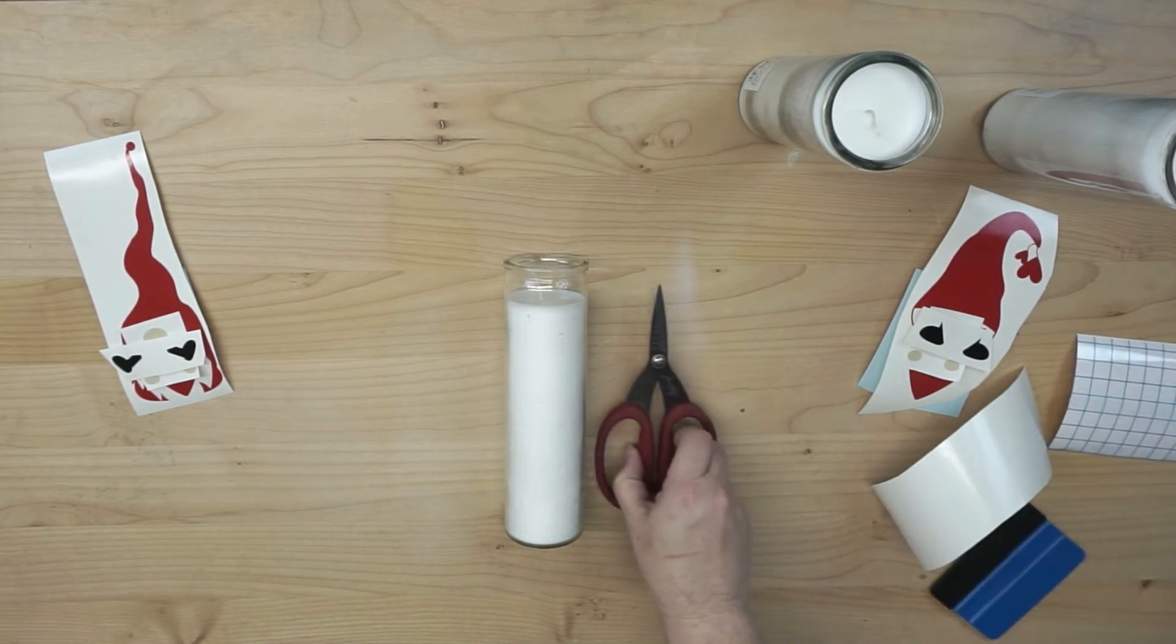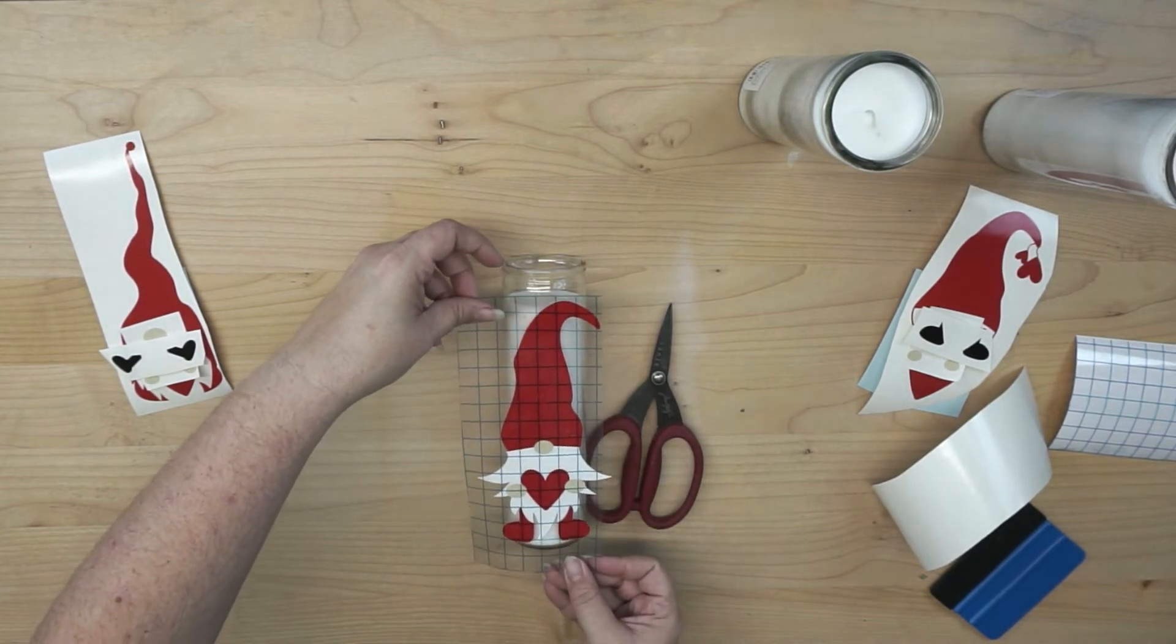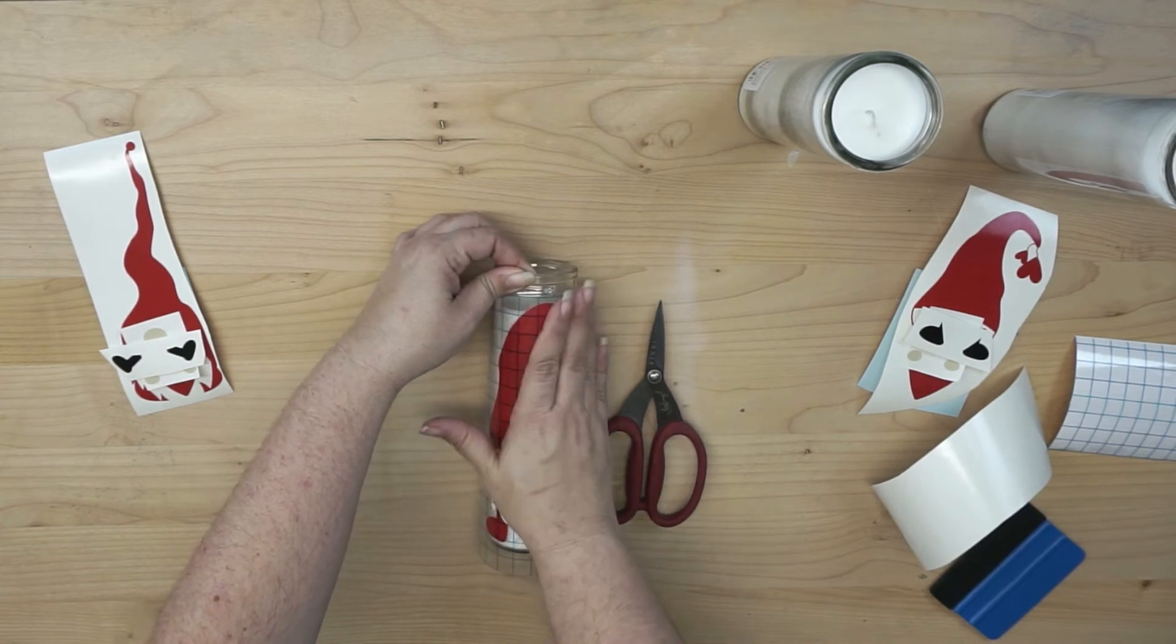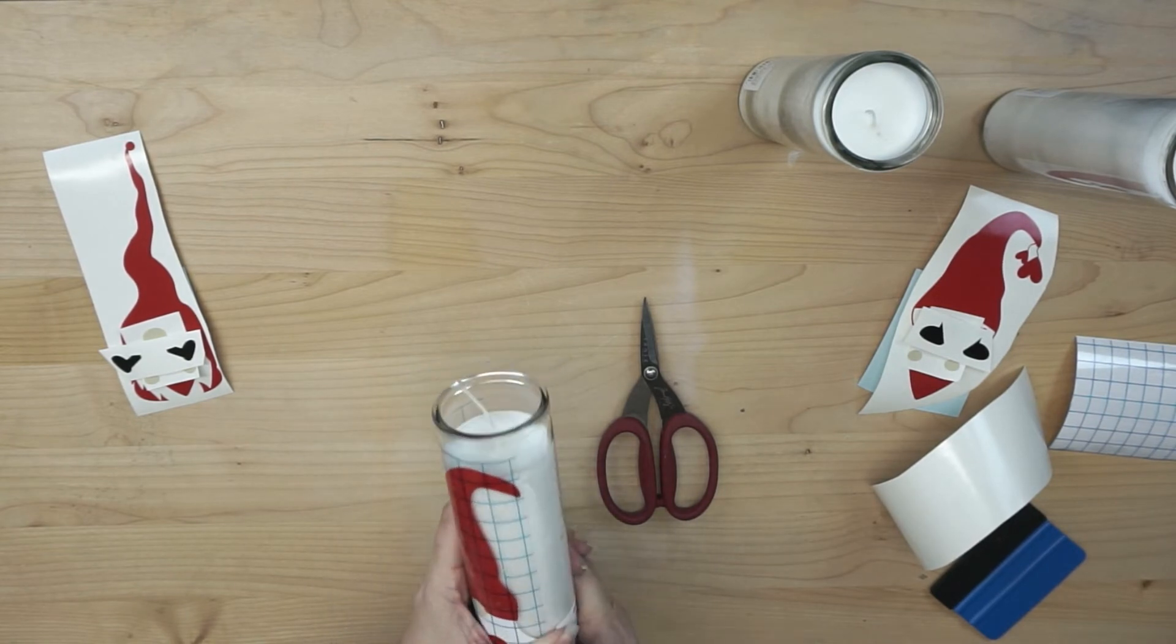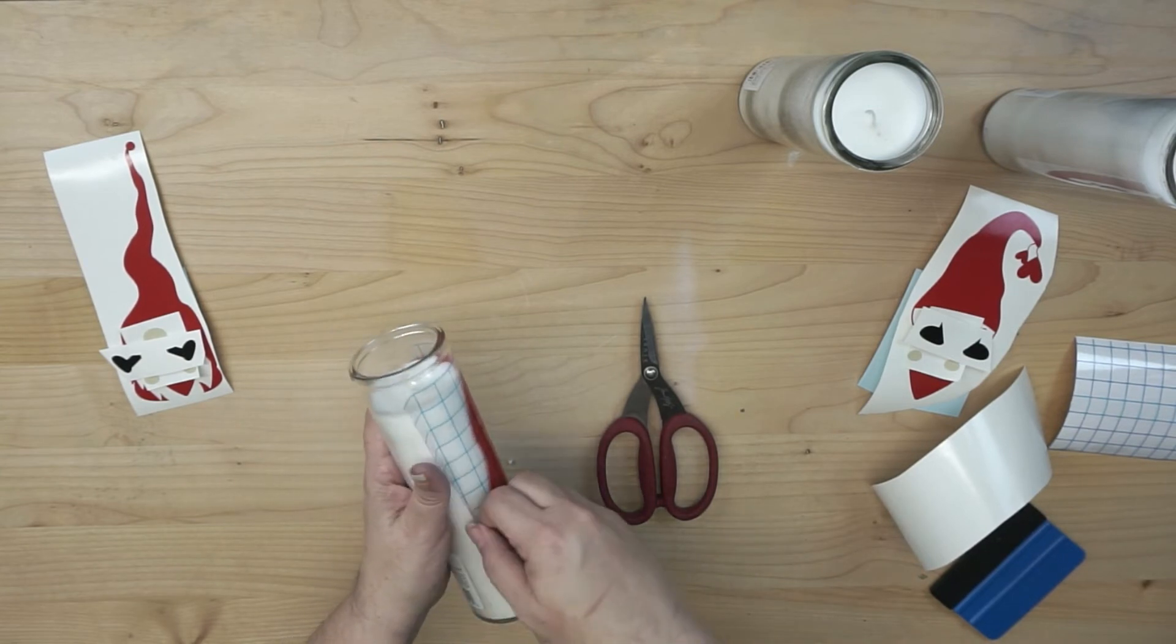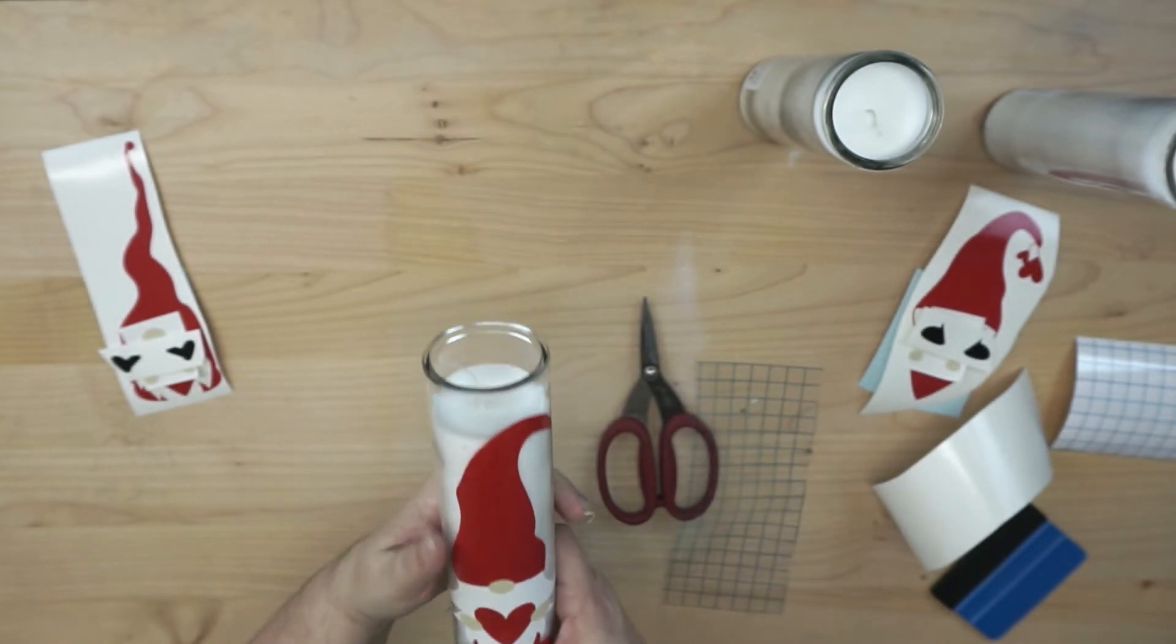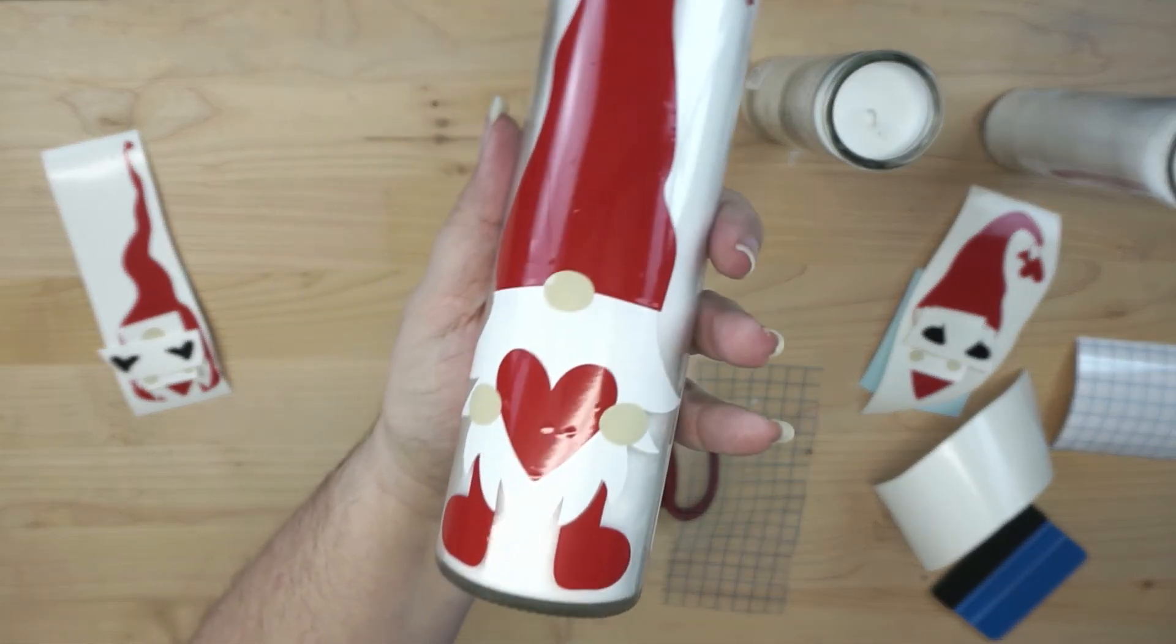Alright, now if you have something that you can kind of butt your candle up against, it just helps to keep it from rolling, and then line this baby up. Alright, so I let it touch down, and on a curved surface, I'm going to start in the middle. I'm going to smooth the middle down, and then I'm going to work my way around. Now I shouldn't really need to, but I can bring my squeegee in. I want to smooth it down really, really well. And then I can just start removing the transfer tape. All of my layers stay adhered. So I think that came out really, really cute.